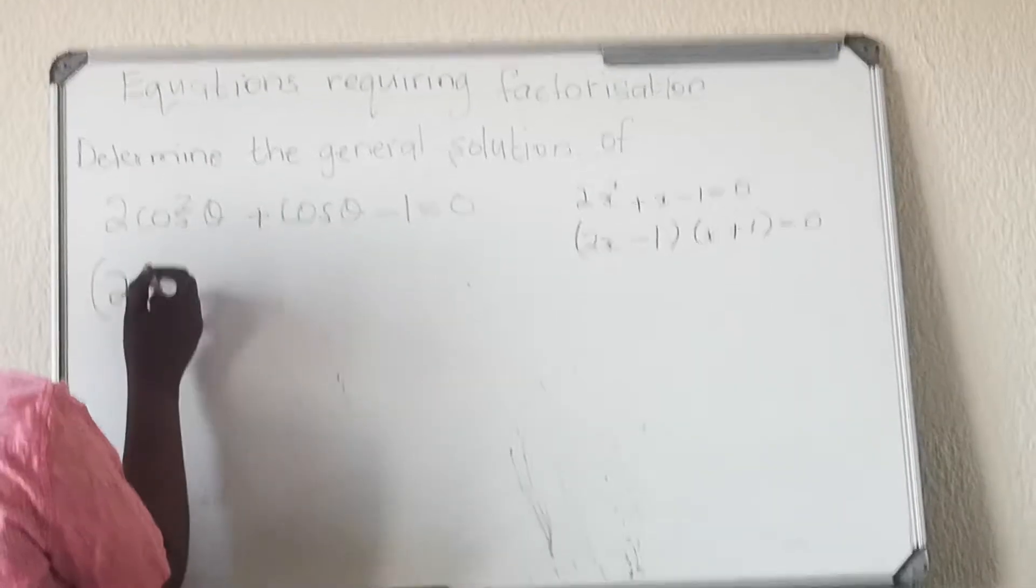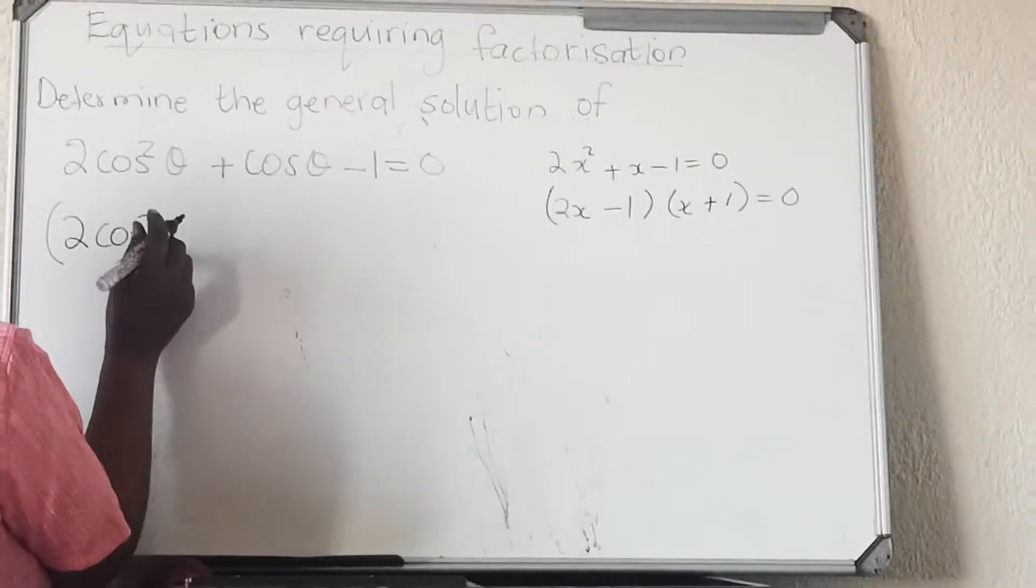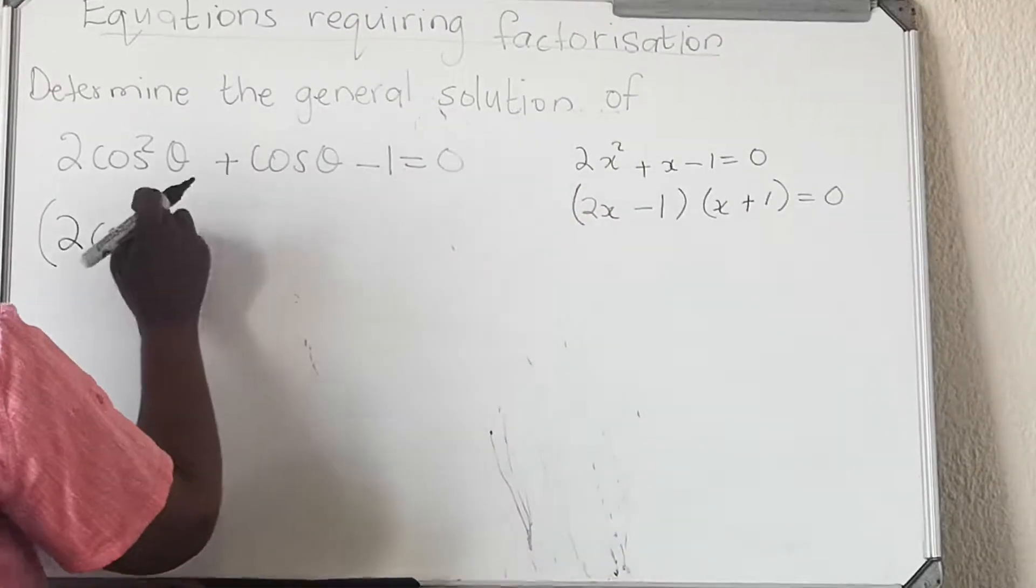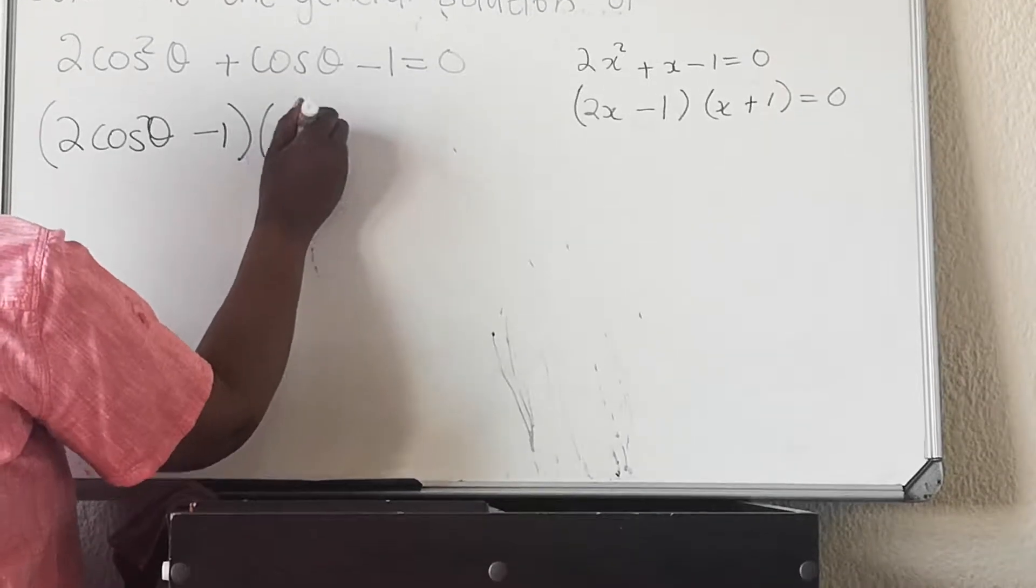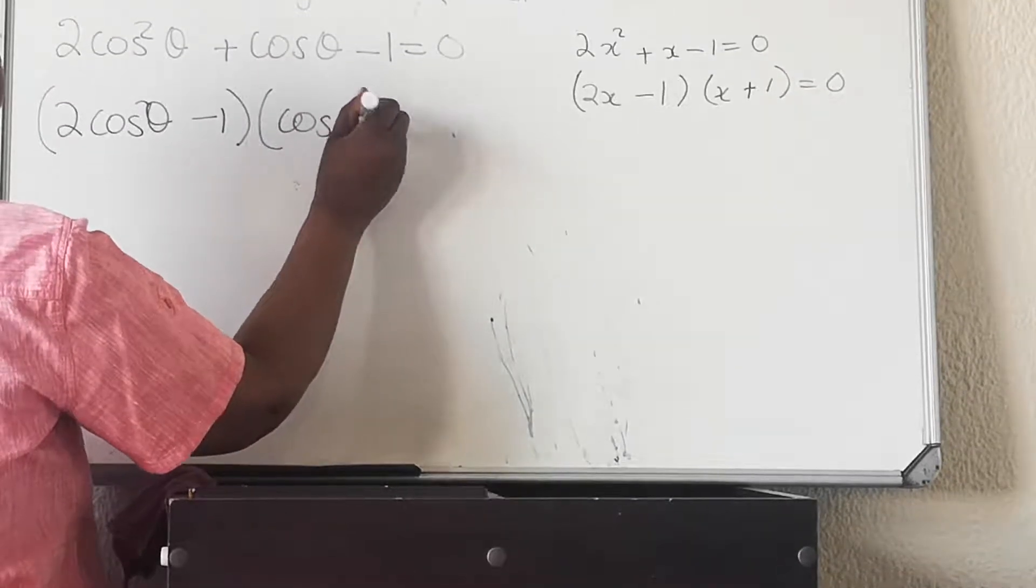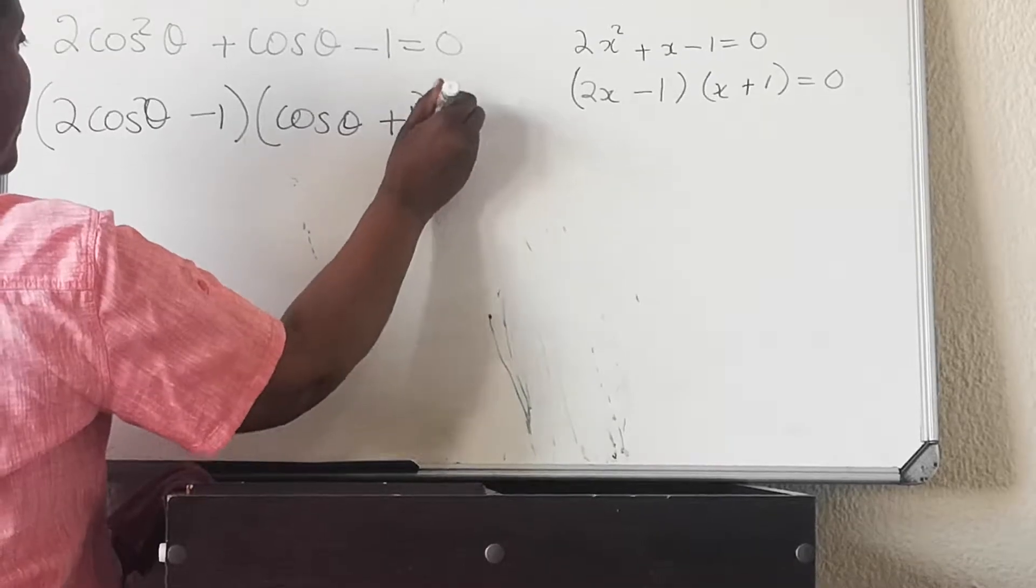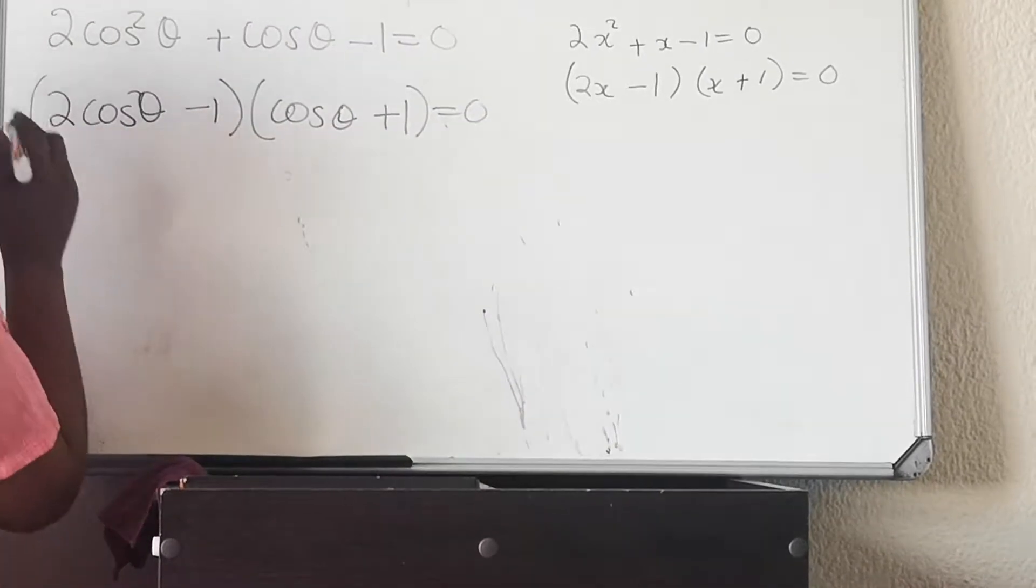When you have done your factorization correctly, you go back and put back the cos. Where there is x, you put cos theta. (2cos θ - 1)(cos θ + 1) = 0.